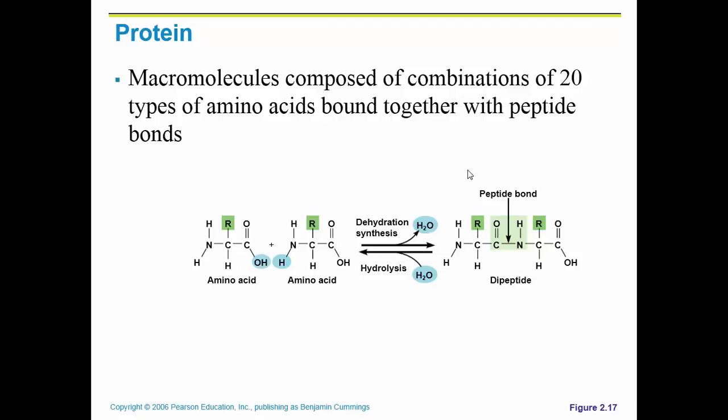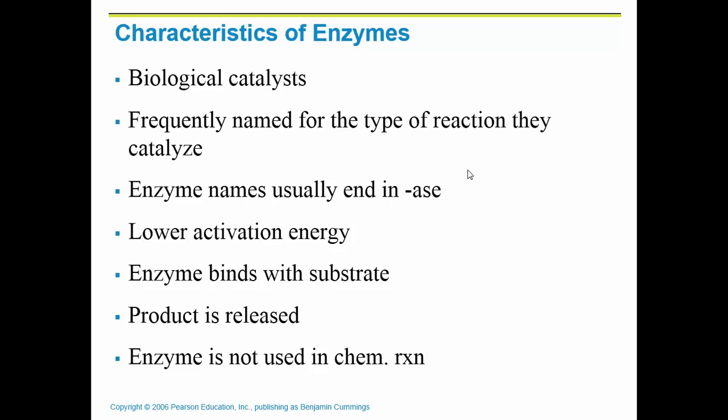There are 20 amino acids found in the human body that make up all of the proteins, and we have many more proteins than just 20. The 20 amino acids are bonded together with a special bond called a peptide bond, and the arrangement of those amino acids makes up the different types of proteins.